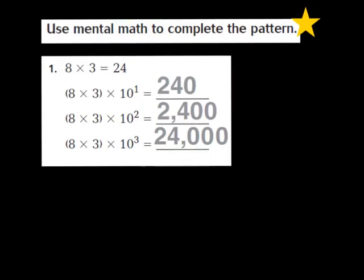Let's start out by taking a look at question number 1. They give us a problem, and that problem is 8 times 3 equals 24. That 8 times 3 equals 24 is called our basic fact. So I'm going to write down "basic fact" next to the 24. We're going to use our basic facts in this lesson and a pattern to help us find our products.